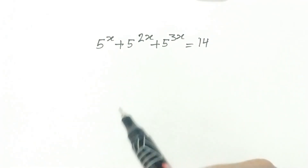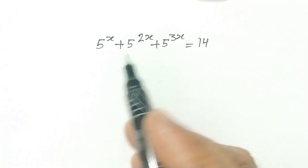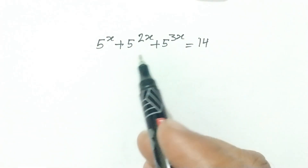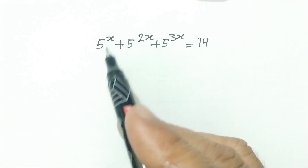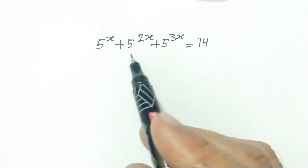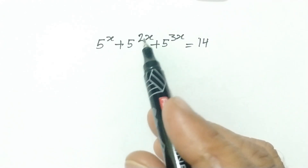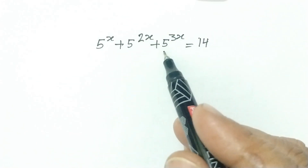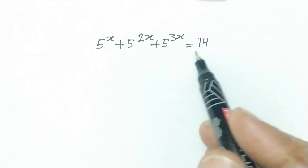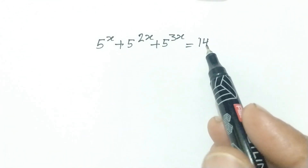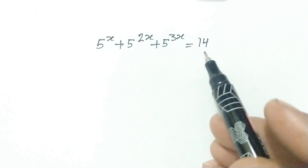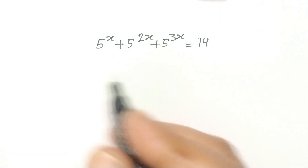Hi friends, welcome to my channel. Today we have a nice exponential equation: 5 to the power x plus 5 to the power 2x plus 5 to the power 3x is equal to 14. So let's start.